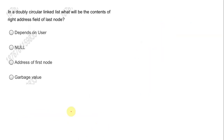Here we have a question based on a linked list — in a doubly circular linked list, what will be the contents of the right field of the last node? Since it is a doubly circular linked list, it will point back to the first node again. So the right address of the last node contains the address of the first node. Option C is the correct answer.